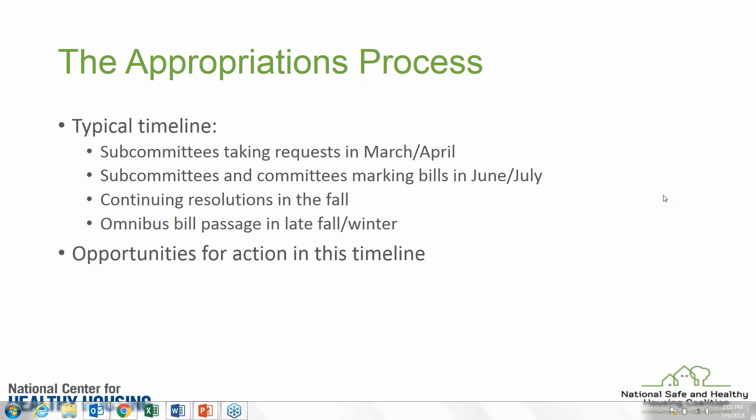Those subcommittees get their requests in pretty early in the year. Typically the House is a little earlier than the Senate, but in March and April they need to know what outside entities or other members of Congress want them to put in their appropriations bill. Then the bill becomes a public document, released after the subcommittee has met and made decisions. Everyone in the public gets to look at that bill, and the committee holds a hearing open to the public where people testify and members ask questions.